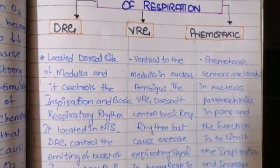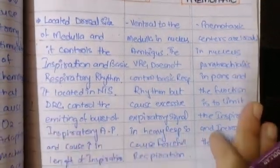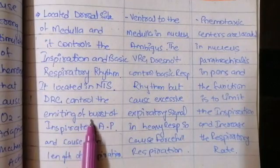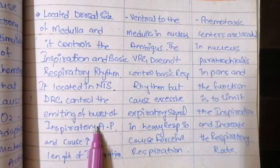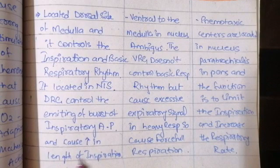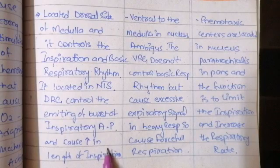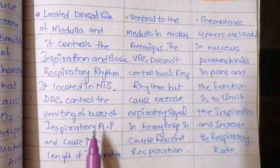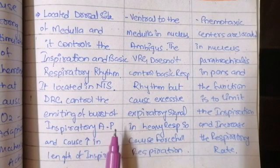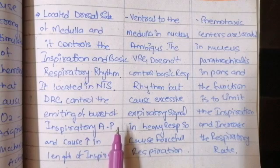An important feature of the dorsal respiratory group is that it controls the emitting burst of inspiratory action potentials. It causes an increased amount of inspiratory action potentials, which ultimately increases the length — that is, the duration — of inspiration. So inspiration, the gaining of air into the respiratory tract, increases in duration because of the dorsal respiratory group of neurons located in the nucleus tractus solitarius. Its second function is control of the basic quiet rhythm of respiration.